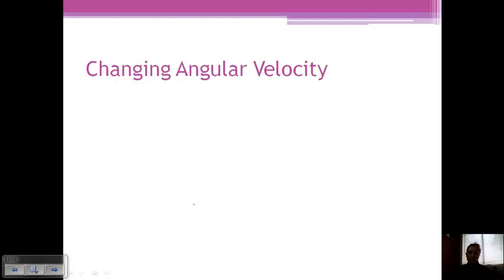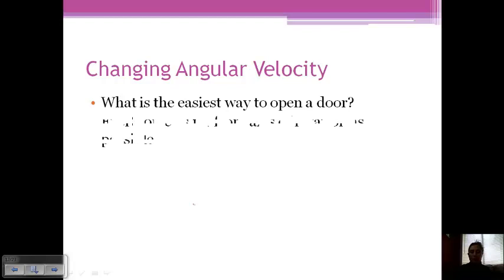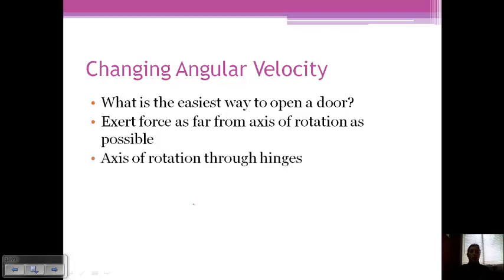So if you think about when you're opening a door, what's the easiest way to open it, or what factors control how much force you have to apply to open the door? Well, you exert a force as far from the axis of rotation as possible. So if you think about the axis of rotation as being the hinges, you've got your doorknob way on the other side, and that's where you're exerting the force.